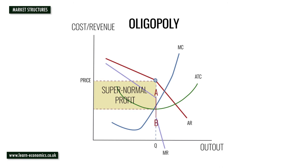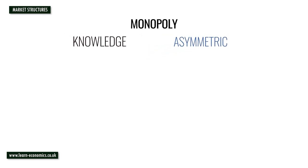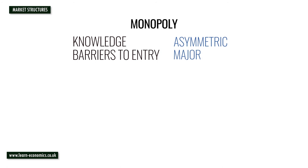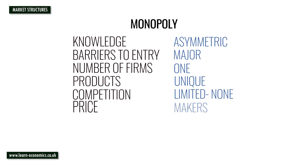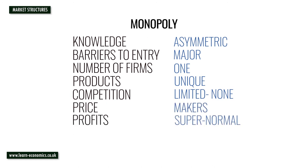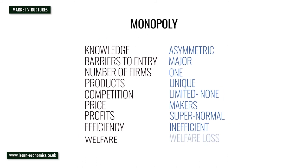For monopoly, knowledge is asymmetric, with a monopolist able to control information. Major barriers to entry exist, including limit pricing, vertical integration along the supply chain, and control of key resources including infrastructure. Firms are price makers. Supernormal profits are likely. Firms are not allocatively or productively efficient, and there is a welfare loss as price is greater than marginal cost.